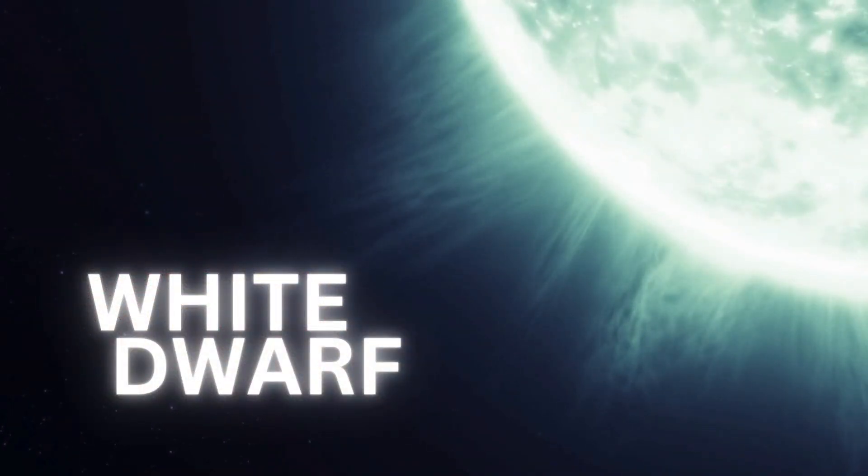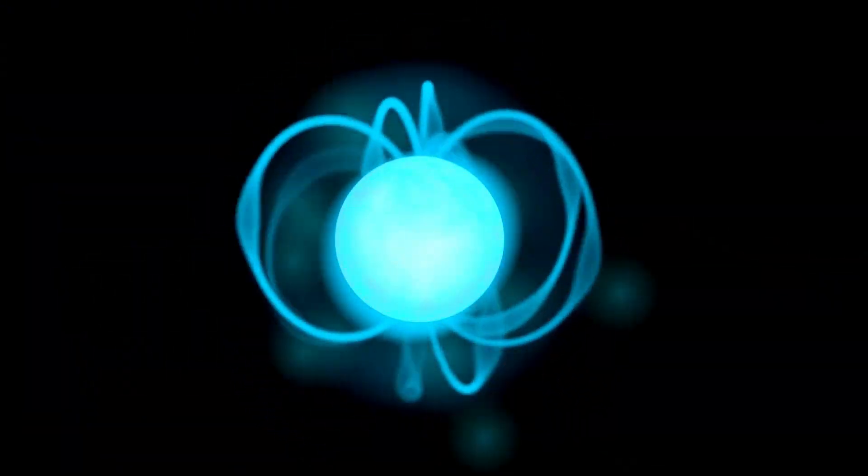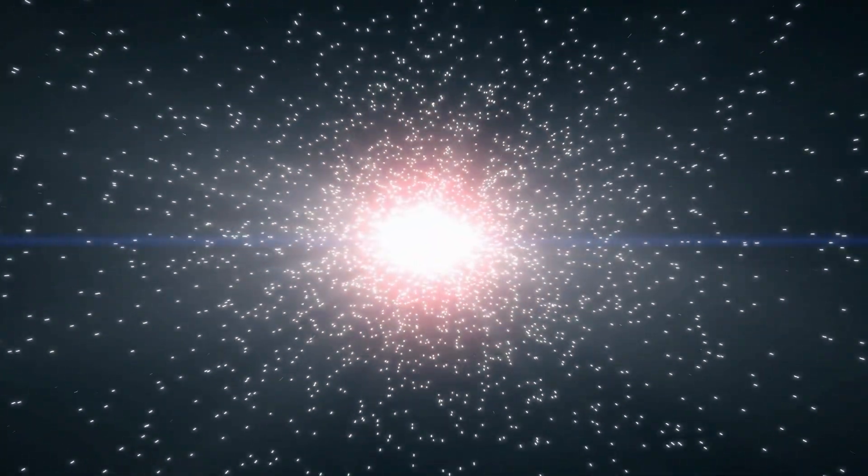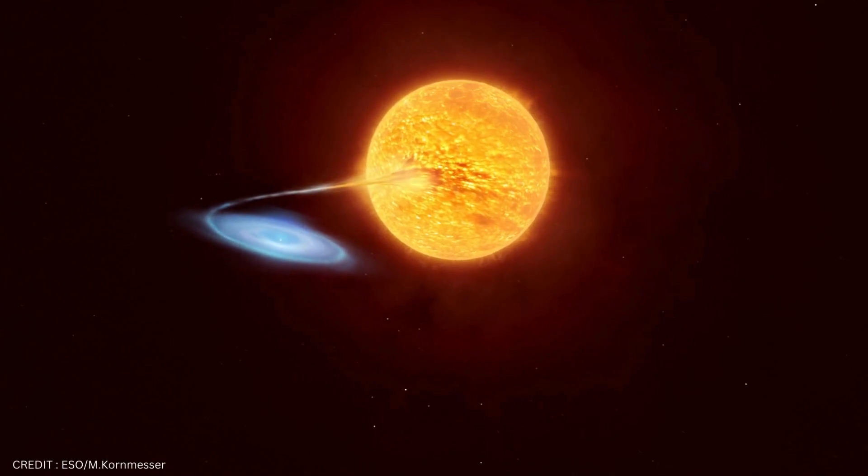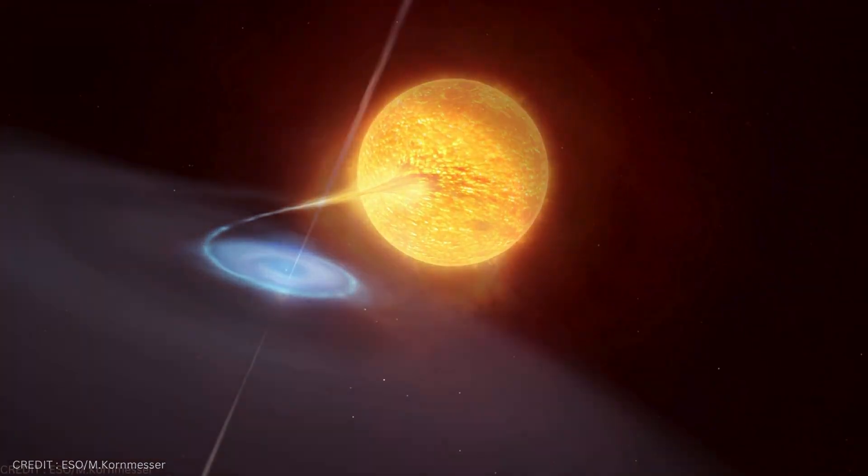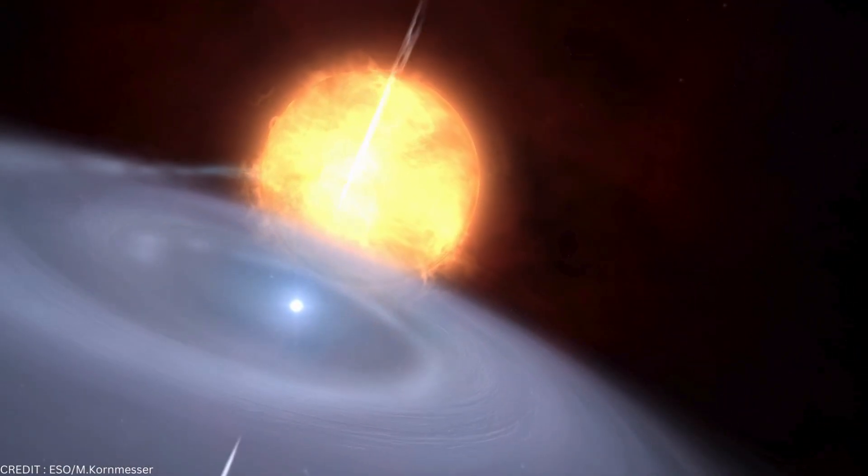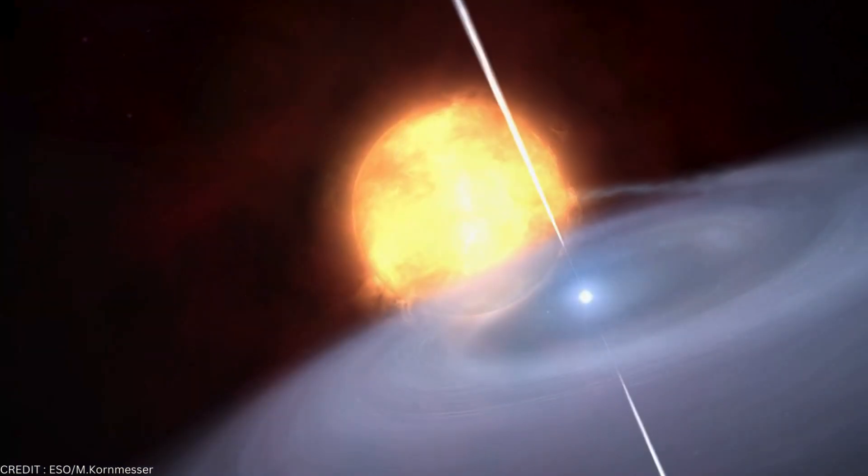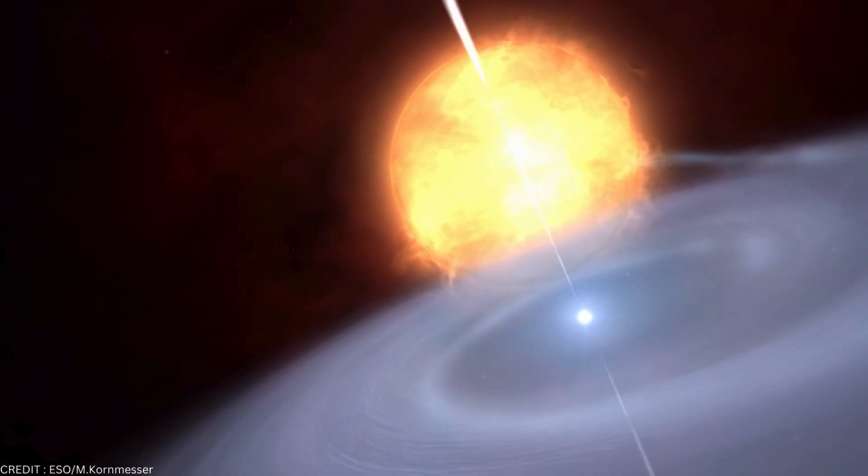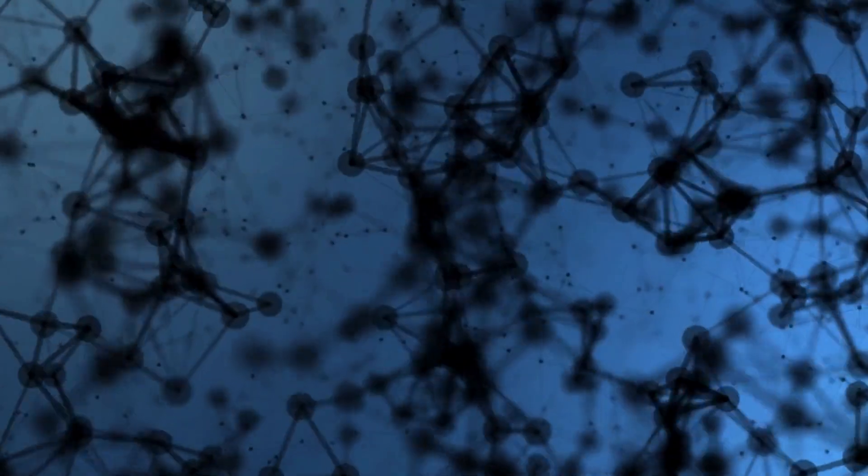The white dwarf, on the other hand, is a dense, compact remnant of a star that has shed its outer layers. The white dwarf's intense gravity pulls material from the red giant, forming an accretion disk around it, spiraling in closer and closer. As this material accumulates on the white dwarf's surface, it undergoes a dramatic process.